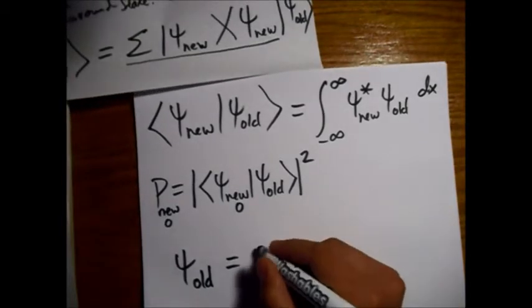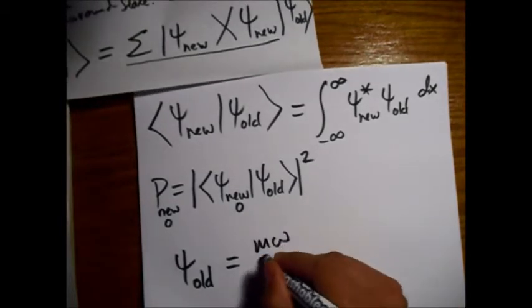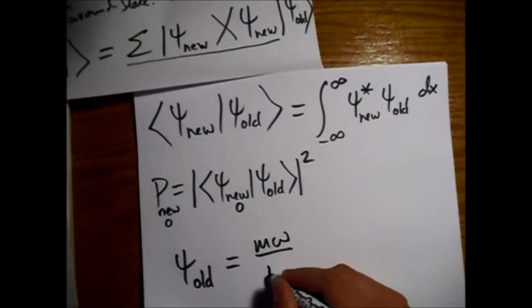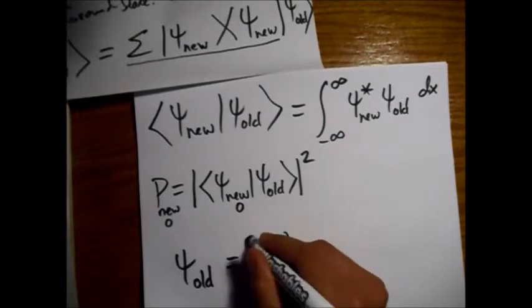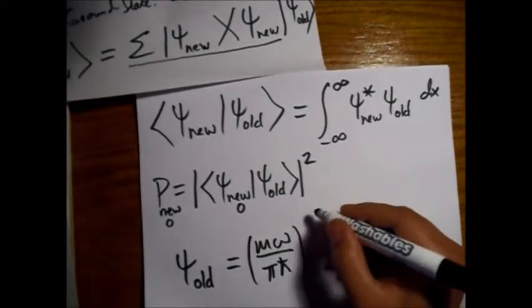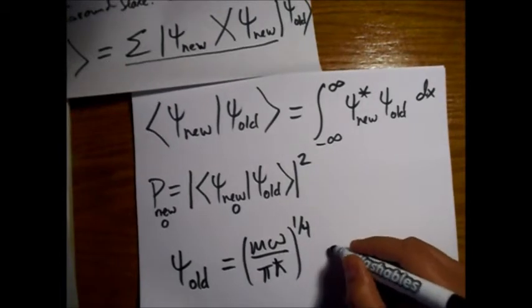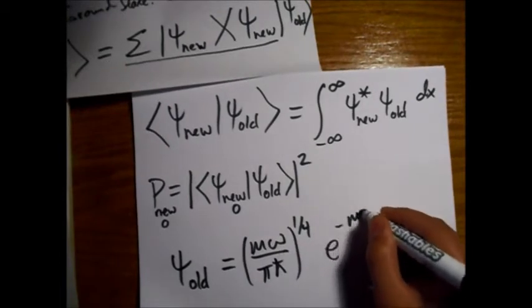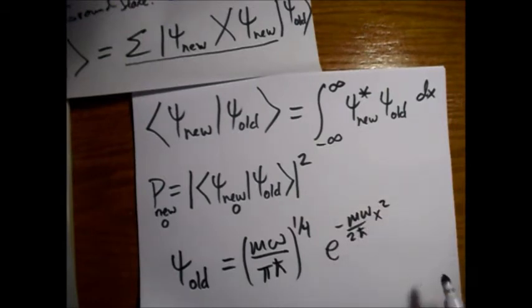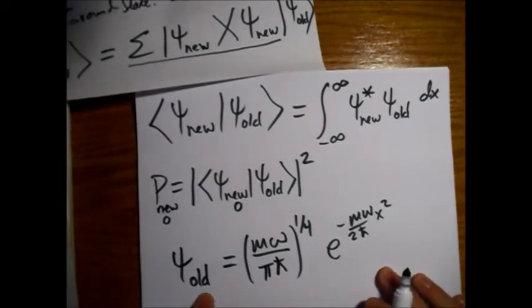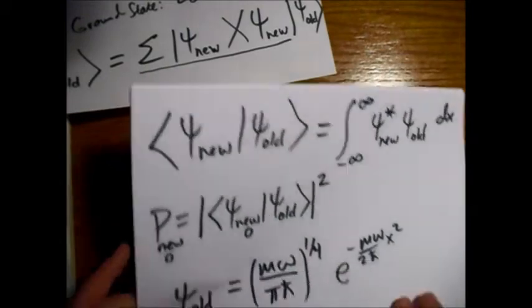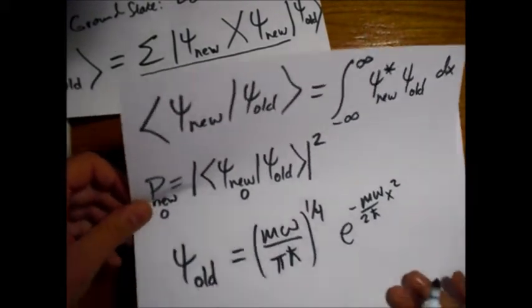So right, so our, let's write out the old wave function. This is the ground state, right? It was initially in the ground state. And this will all be in terms of old omega. So we have m omega pi h bar, and this is 2 to the 1/4 power. And then we have e to the minus m omega over 2 h bar x squared. So this is the old ground state.